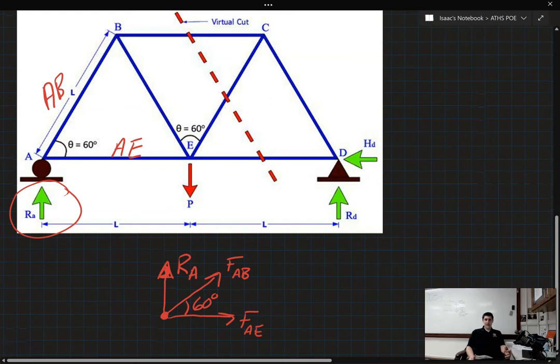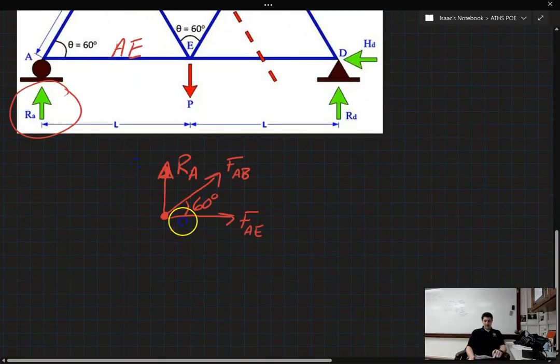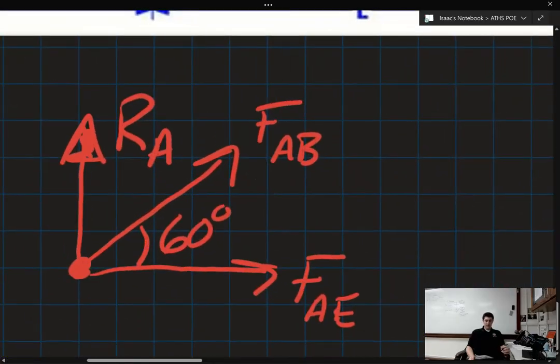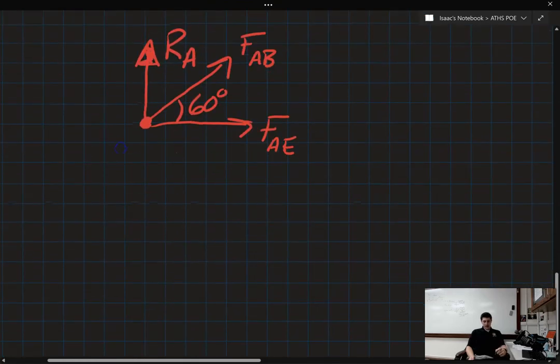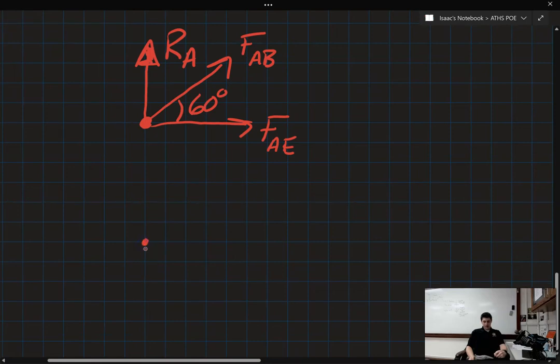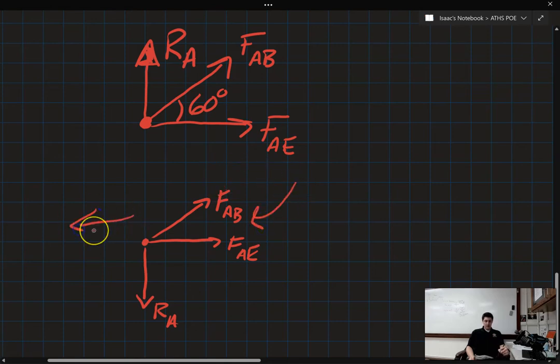So this might not look right, but this is actually the correct setup for this truss diagram. Now obviously if this thing is in equilibrium and at rest, then this won't work. One of these forces is going to have to flip. And what we'll find is that our reaction force is actually going to have to pull down instead of up. Like this.